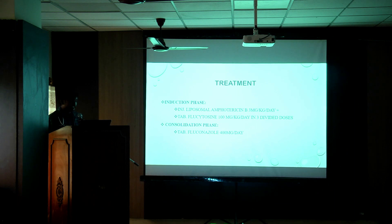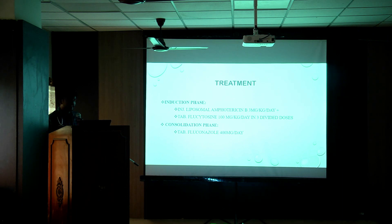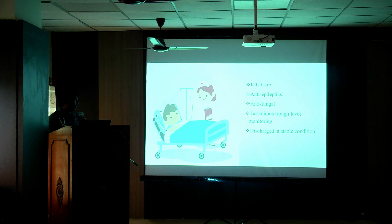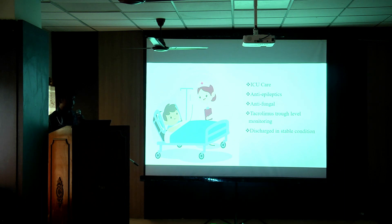He was treated in the induction phase with injection liposomal amphotericin B at a dose of 3 mg/kg/day plus tablet flucytosine at a dose of 100 mg/kg/day in 3 divided doses for 2 weeks. After 2 weeks, he was moved to the consolidation phase where high-dose fluconazole of 400 mg/day was given, with close monitoring of tacrolimus trough levels. Fluconazole interferes with CNI metabolism, so in our unit protocol, whenever we start azoles, we reduce the CNI dose by 40% before starting and then titrate based on tacrolimus trough levels.